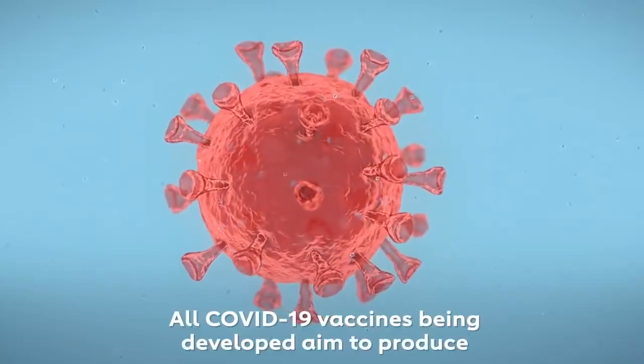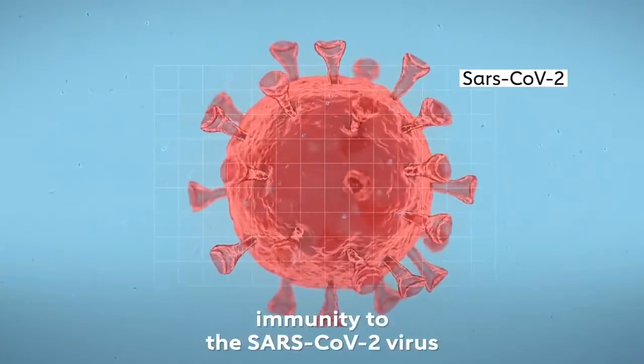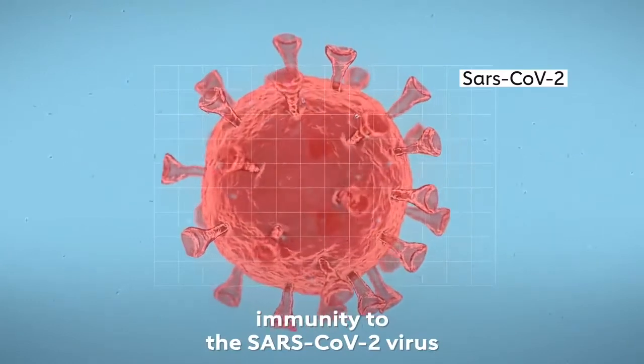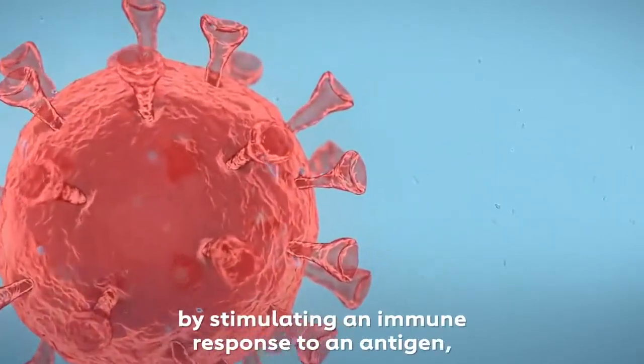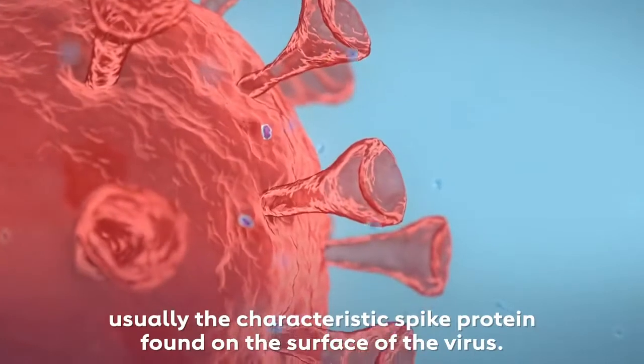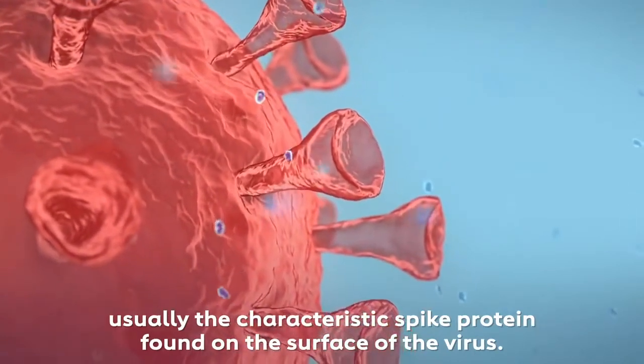All COVID-19 vaccines being developed aim to produce immunity to the SARS-CoV-2 virus by stimulating an immune response to an antigen, usually the characteristic spike protein found on the surface of the virus.